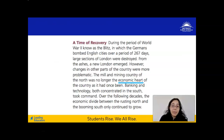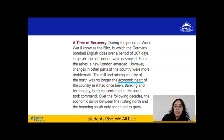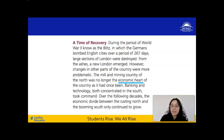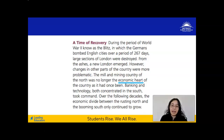Now let's look at one example from the paragraph. Your task for this thinking portion is to underline examples of personification from the A Time of Recovery section. Here's one example to get you started. The author writes: the mill and mining country of the north was no longer the economic heart of the country as it had once been. We're ascribing 'heart' — a human quality — to the mill and mining country, so we're personifying that area. That's one example; there are at least two more in this paragraph. Pause the video now and try to find them yourself.